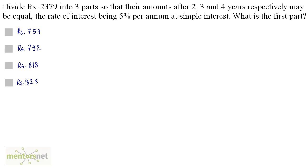Divide Rs. 2,379 into 3 parts so that their amounts after 2, 3, and 4 years respectively may be equal, the rate of interest being 5% per annum at simple interest. What is the first part? Let the three parts be x, y, and z. So x plus y plus z equals 2,379. These parts are invested for 2, 3, and 4 years at 5% per annum simple interest.